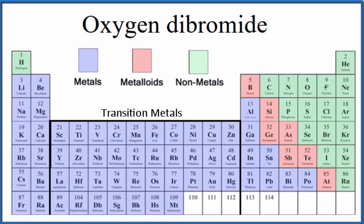We find oxygen, that's right here, and then we can find bromide, that's bromine, so that's going to be right here. So both of these are nonmetals.